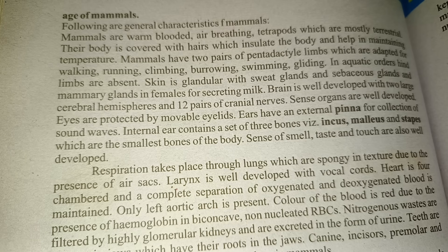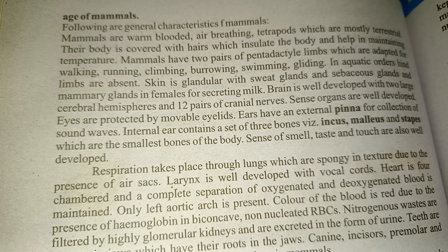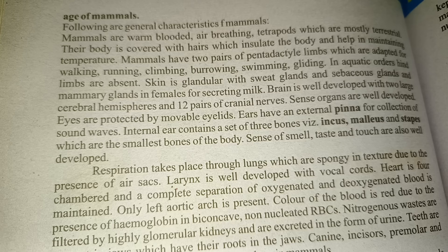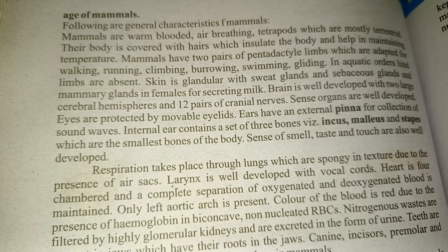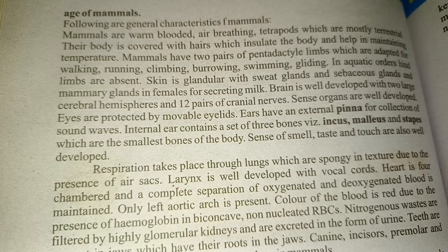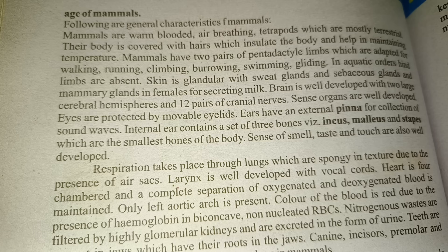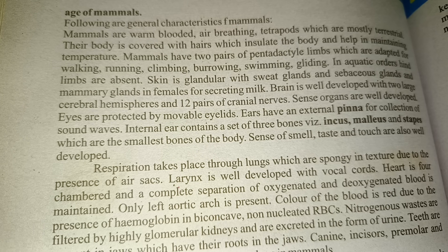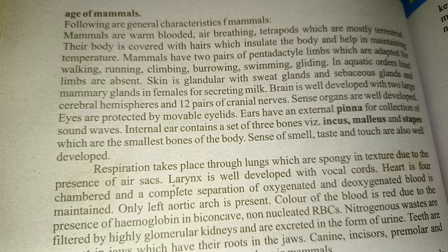So what is meant by Age of Mammals? The following are the general characteristics of mammals. Mammals are warm-blooded, air-breathing tetrapods which are mostly terrestrial. Their body is covered with hairs which insulate the body and help in maintaining body temperature.